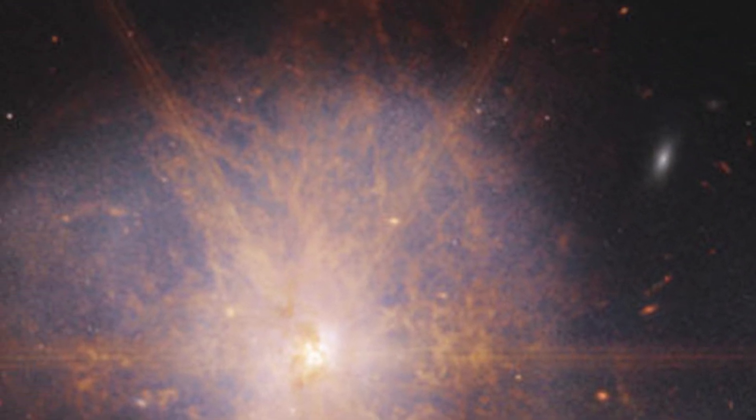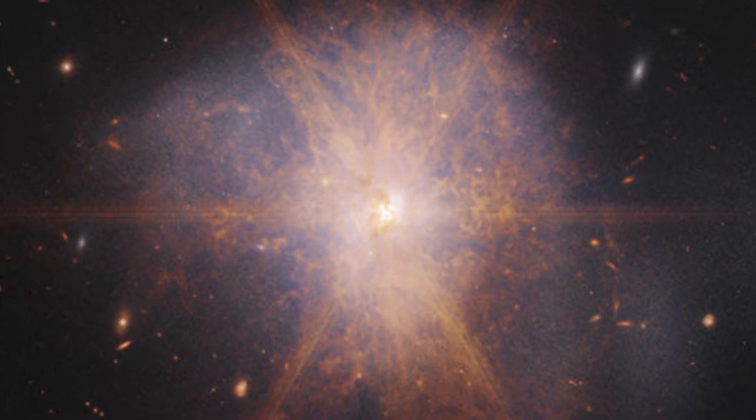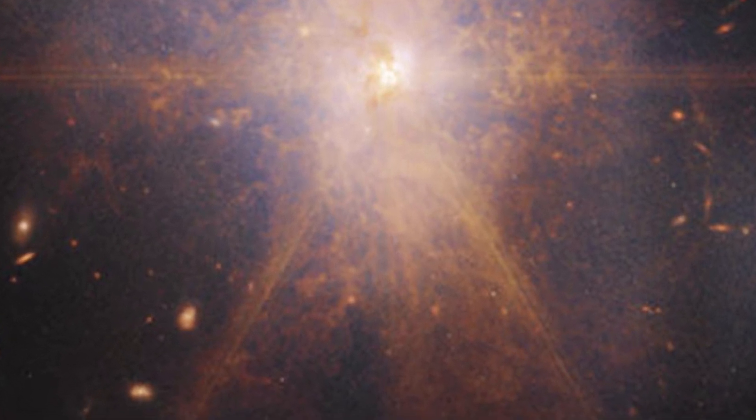This image also shows faint tidal tails extending from the outskirts of the merger, indicating the gravitational pull between the two galaxies. Finally, the reddish and orange streams and filaments represent scattered organic materials in ARP 220.